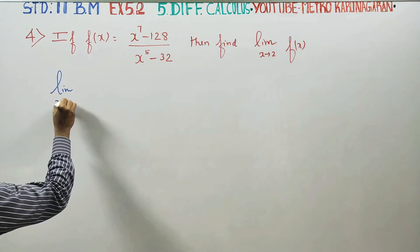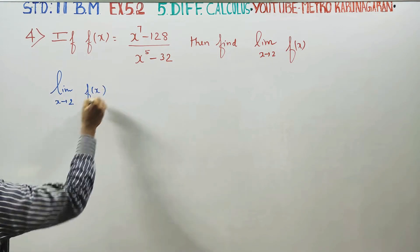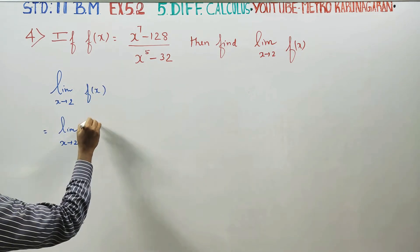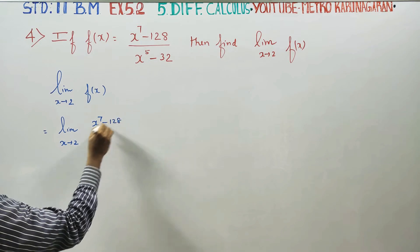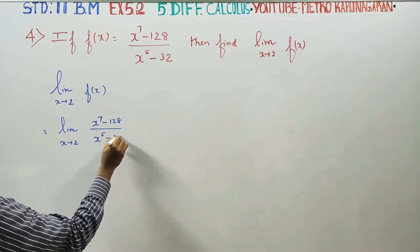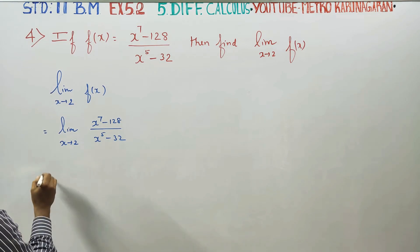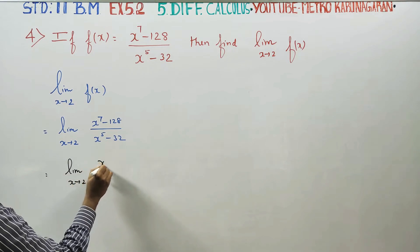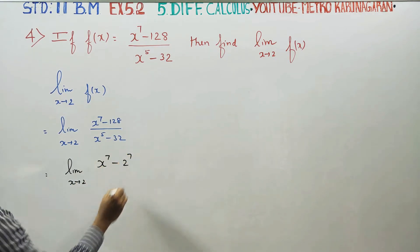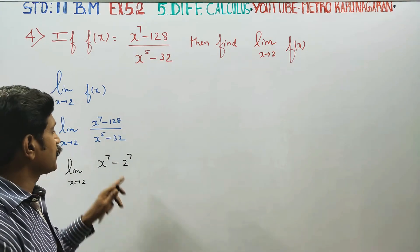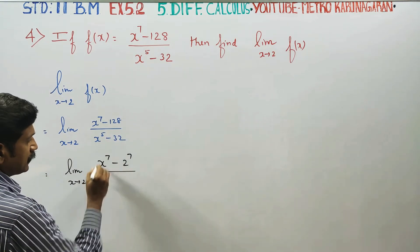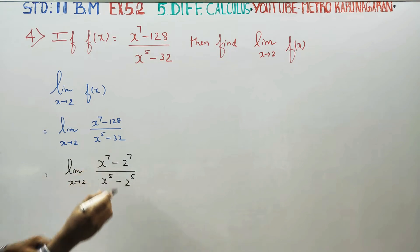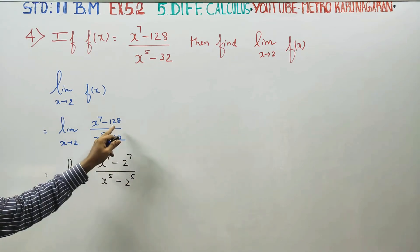Limit of x tends to 2 of f(x) is equal to limit of x tends to 2 of x power 7 minus 128, divided by x power 5 minus 32. Now, 128 is equal to 2 power 7, since 2 into 2 into 2 into 2 into 2 into 8 equals 128. And x power 5 equals 2 power 5, since 2 into 2 into 2 into 2 into 2 equals 32. So 2 power 5 equals 32 and 2 power 7 equals 128.